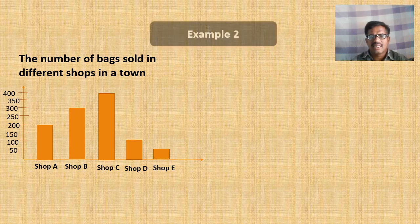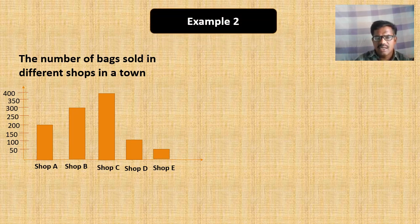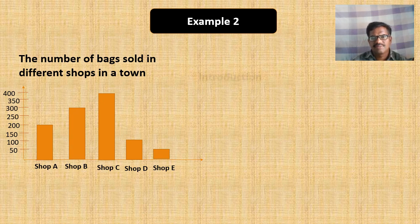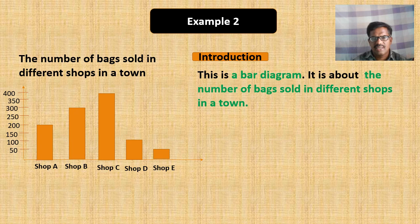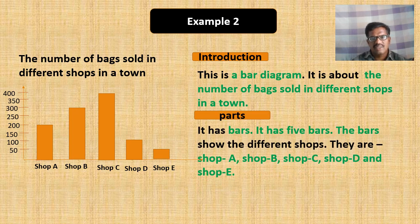Let us take another example — Example 2. Here is another bar diagram. The heading of the bar diagram is 'The number of bags sold in different shops in a town.' The introduction will go like this: 'This is a bar diagram. It is about the number of bags sold in different shops in a town.' Next, the parts of the diagram: it has five bars. The bars show the different shops — they are Shop A, Shop B, Shop C, Shop D, and Shop E.